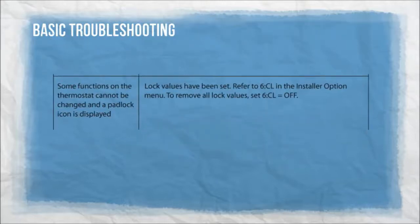Some functions on the thermostat cannot be changed and a padlock icon is displayed — lock values have been set. Refer to 6LC in the installer option menu. To remove all lock values, set 6LC to off.